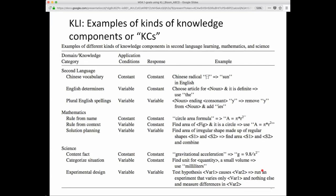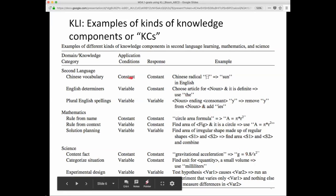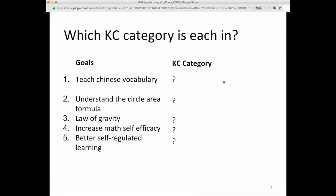Which of CLI's knowledge categories does each goal appear to belong? Take 'Teach Chinese vocabulary' — does it belong as a kind of fact, a constant-constant relationship? Look at that: Chinese vocabulary right there. That's straightforward — so that's a fact.